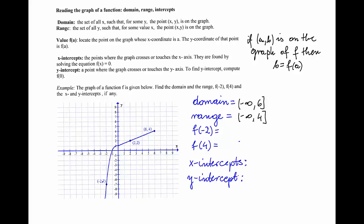Now, if I want the value of the function at negative 2, I have to remember that if the point (a, b) is on the graph of the function f, then b — the y-coordinate of that point — is the value of the function at a.